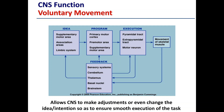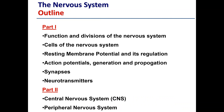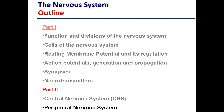This loop allows the central nervous system to make adjustments or even change the idea and intention, so as to ensure smooth execution of the task. Now we're going to focus on the peripheral nervous system.